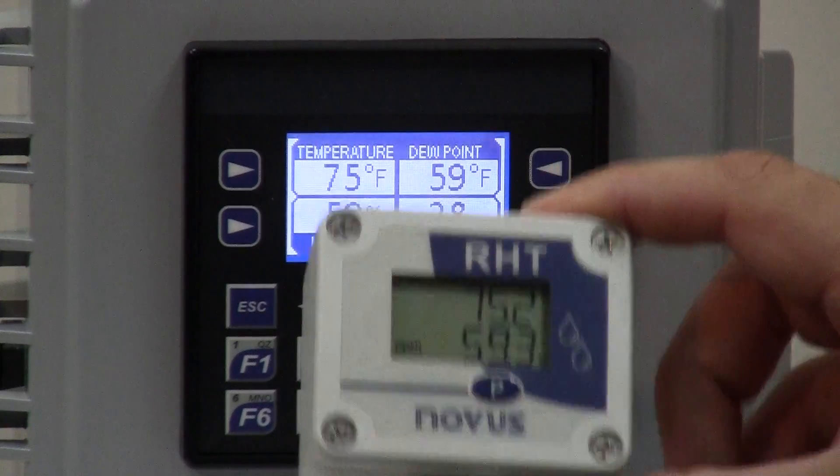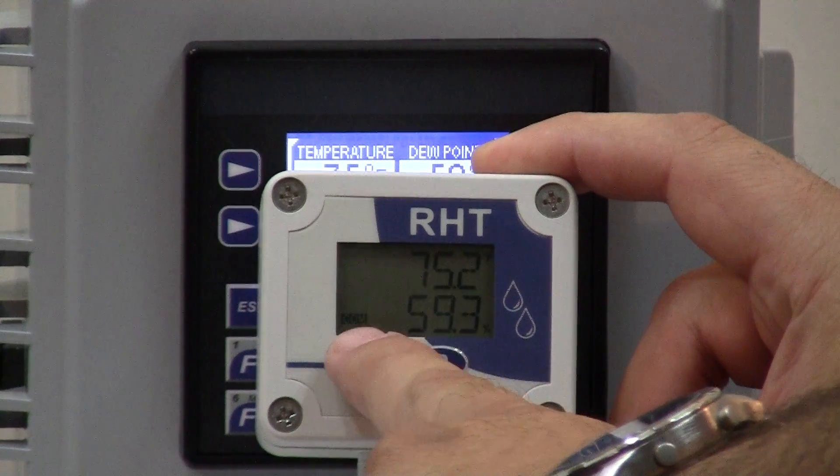The wall sensor has an indicator to show it has communications to the main controller.